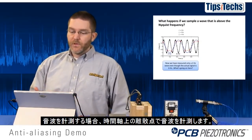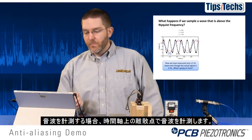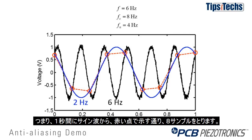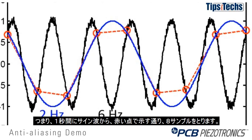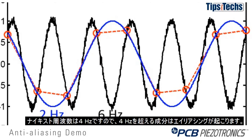When we sample an acoustic wave, we're taking snapshots of that wave at discrete points in time. In this example we have a 6 Hz acoustic wave in black that we're trying to measure, and we have our sample rate set at 8 Hz. That means we're going to take eight samples of that sine wave in one second, and you can see those samples as red dots on the screen. Our Nyquist frequency is 4 Hz, which means anything above 4 Hz will be aliased.